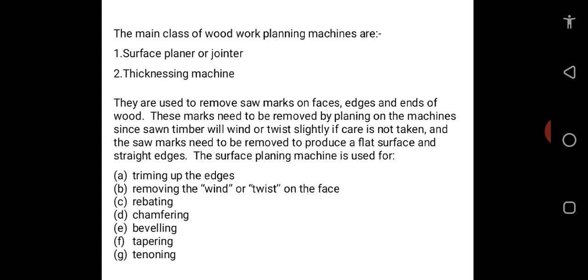The surface planing machine is used for performing the following: A, trimming up the edges; B, removing the wind or twist on the face of the woods; C, rebetting; D, chamfering; E, beveling; F, tapering; and G, tenoning.